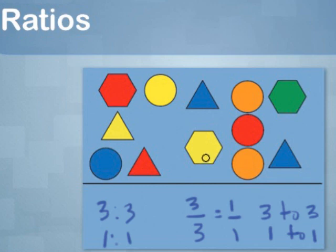There are many other types of ratios you can explore. For example, look at the ratio of red circles to orange circles, or the ratio of yellow shapes to non-yellow shapes.